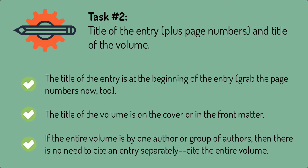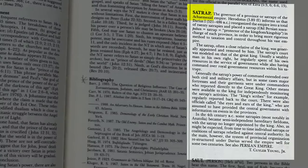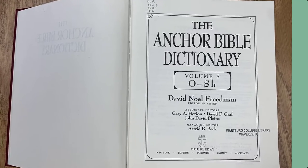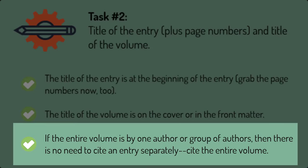Task 2: Title of the entry plus page numbers, and title of the volume. The title of the entry is at the beginning of the entry — grab the page numbers now too. The title of the volume is on the cover or in the front matter.